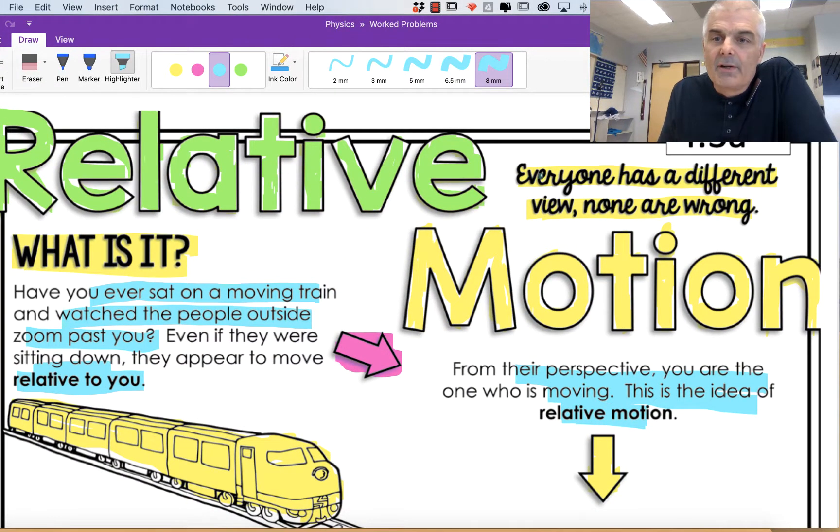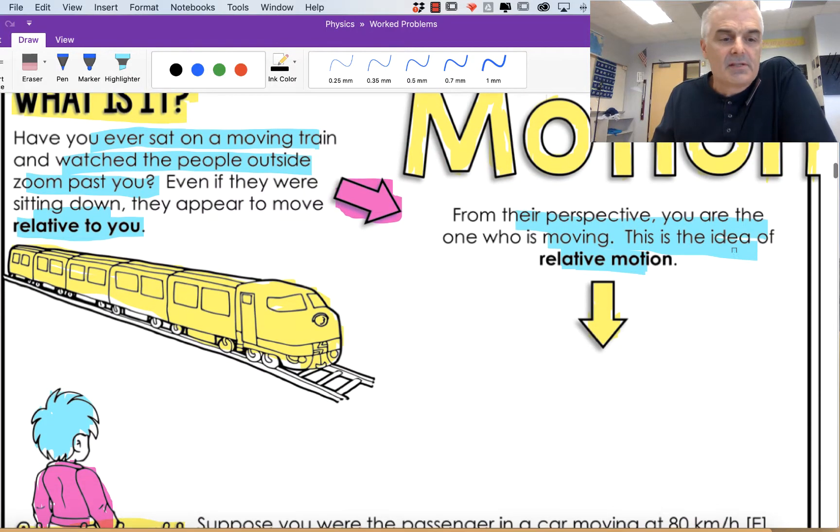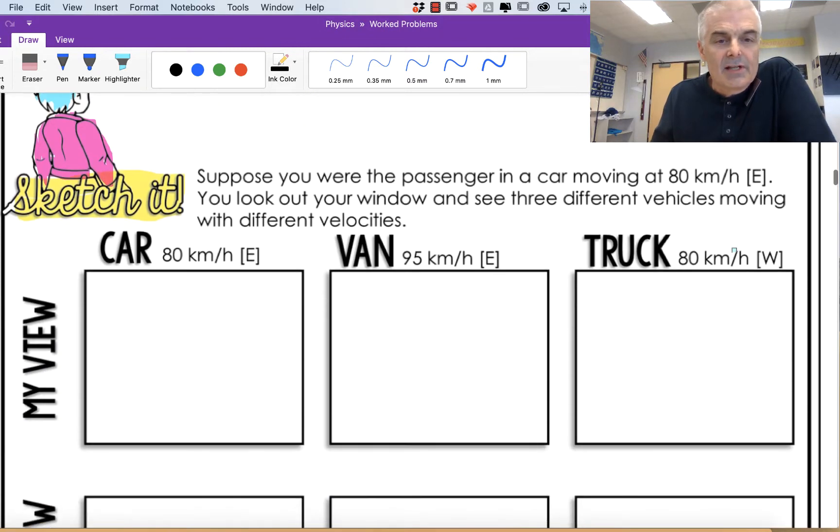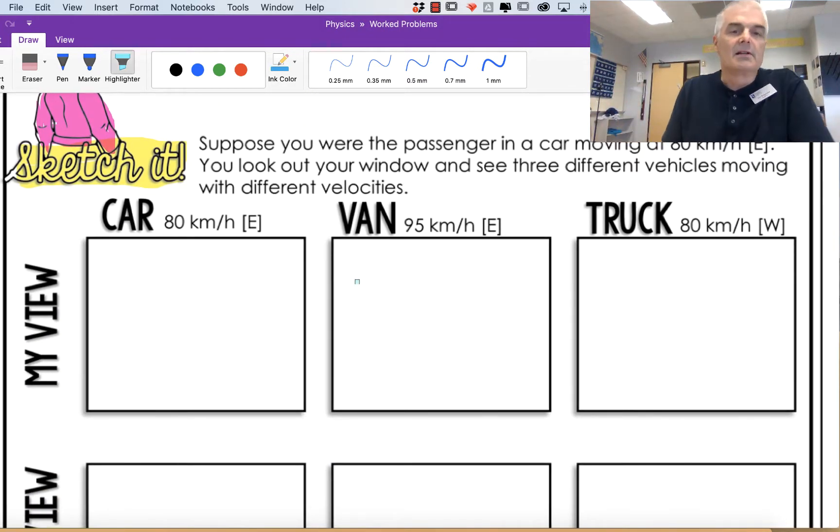Think of it this way. Everyone has a different view and none of them are wrong, and we can use this to help solve these kinds of problems. So let's suppose that you're a passenger in a car moving 80 kilometers per hour to the east.